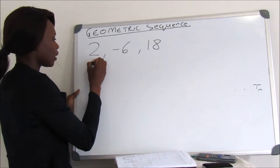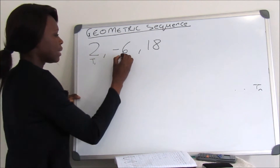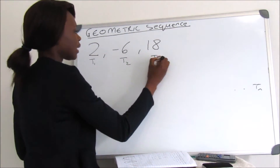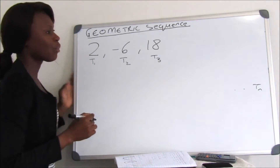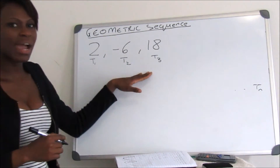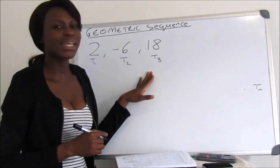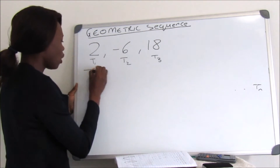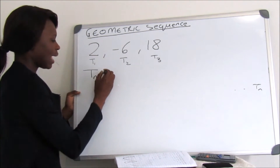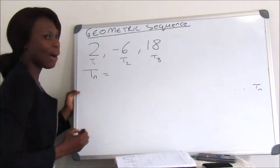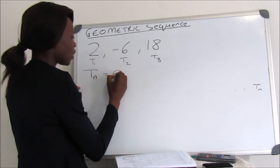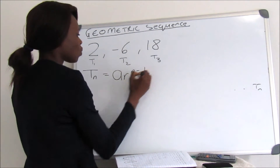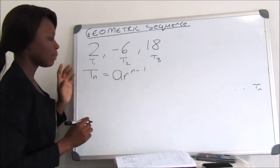This is our T1, this is our T2, and this is our T3. The question asks us to find Tn, the equation for the sequence. Our standard equation is Tn equals AR to the exponent of n minus 1.